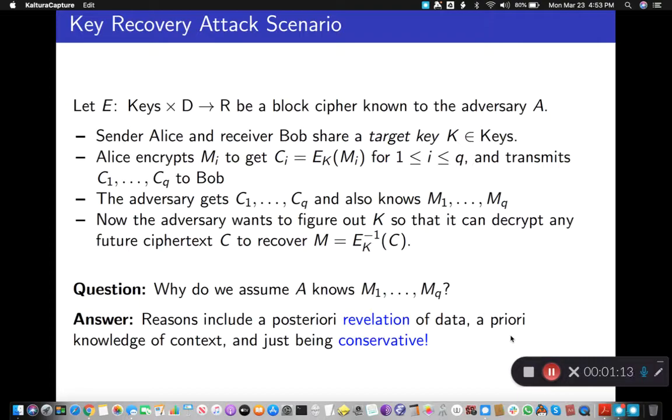So let's fix some arbitrary block cipher. There's a key space, an input space, and an output space, and the block cipher is entirely public. It's known to the adversary and the users. Just like DES, every element of its design is public. Security is based only on the fact that Alice and Bob share a key that the adversary doesn't a priori know.